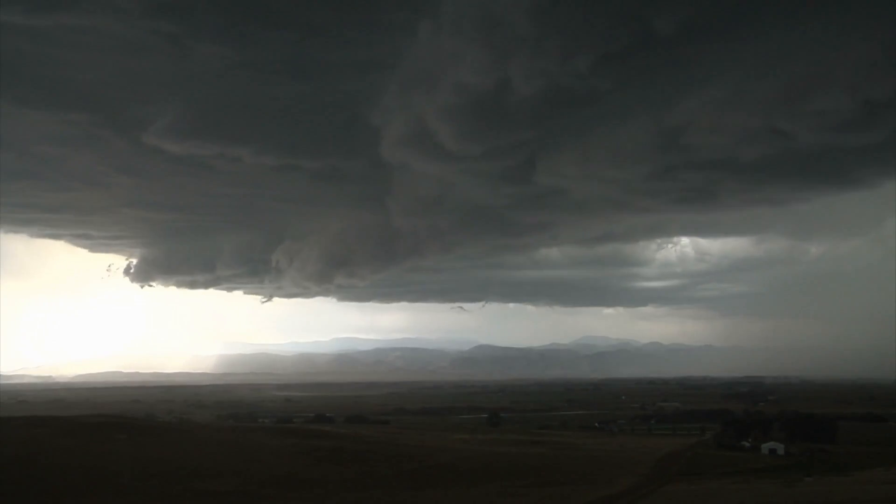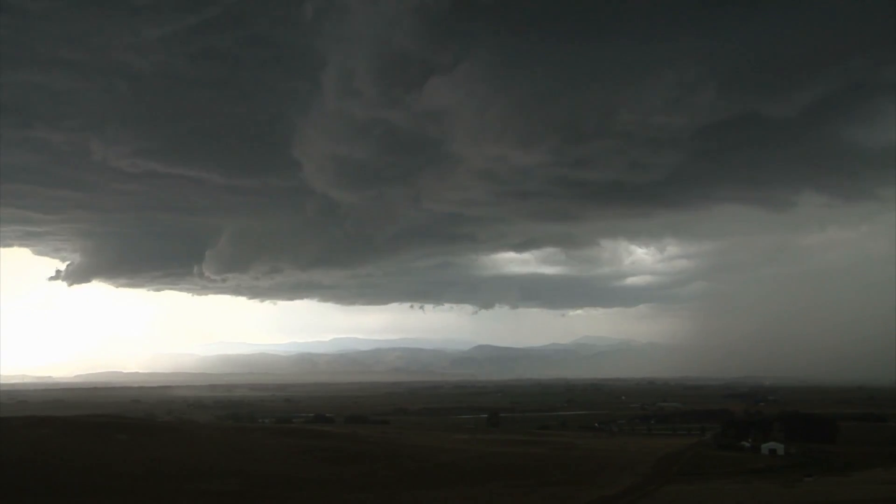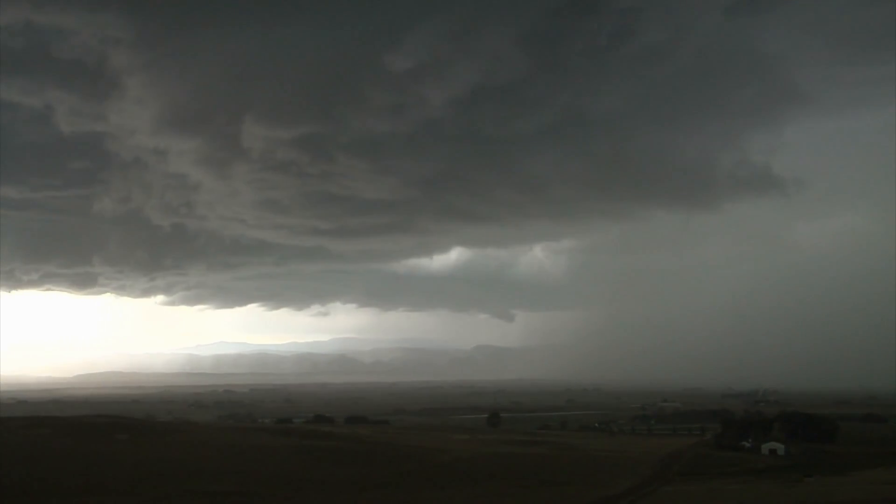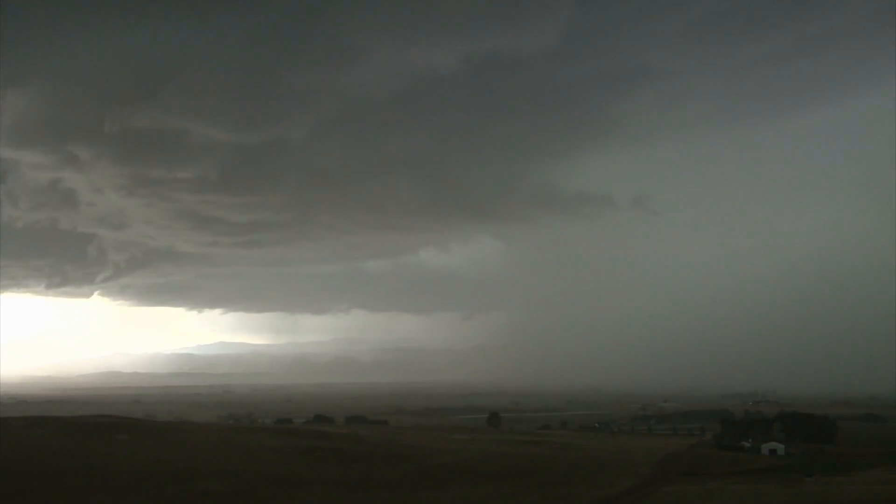Iodine can even influence the weather. In a process called cloud seeding, tiny crystals of silver iodide are released into the atmosphere to encourage rain formation. This method has been used in places like China, Dubai, India, and many other places to increase rainfall in arid regions.